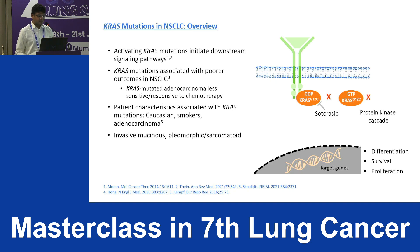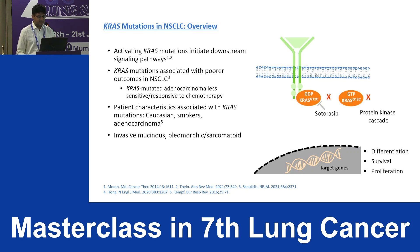KRAS mutations are more commonly seen in Caucasians, smokers, and patients with adenocarcinoma. In invasive mucinous, pleomorphic, or sarcomatoid variants, the prevalence is still higher.